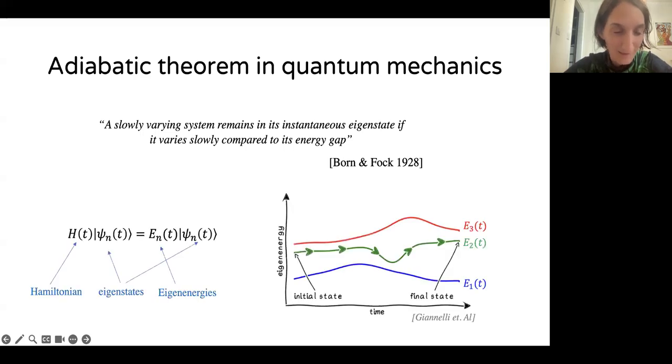So mathematically, a time-dependent system has a time-dependent Hamiltonian, and therefore also the eigenstates and eigenenergies depend on time. A pictorial picture to understand the adiabatic theorem is the following. What you see here is the eigenvalues of the system as a function of time, and the statement is the following.